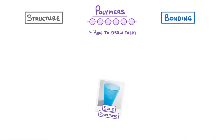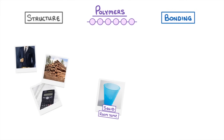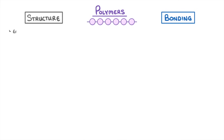Polymers are a huge and diverse group of different substances and they make up all sorts of things. What they all have in common is that each polymer molecule is made up of lots of smaller units called monomers.